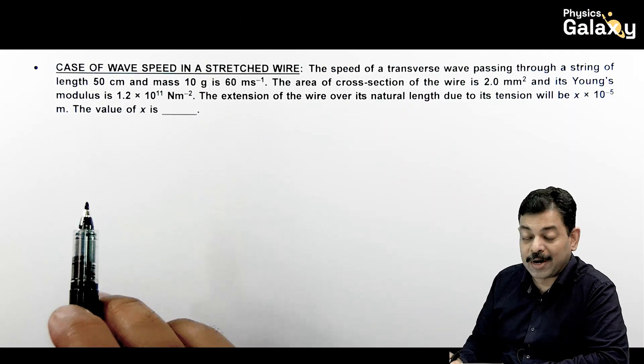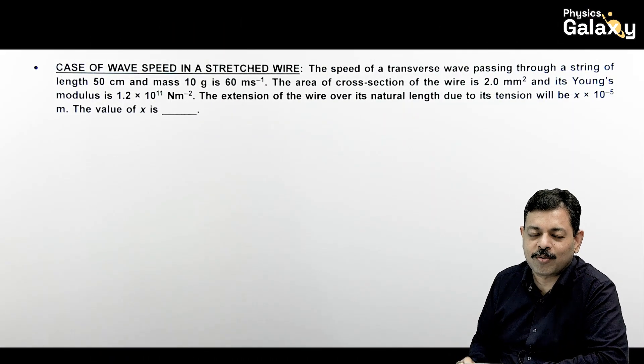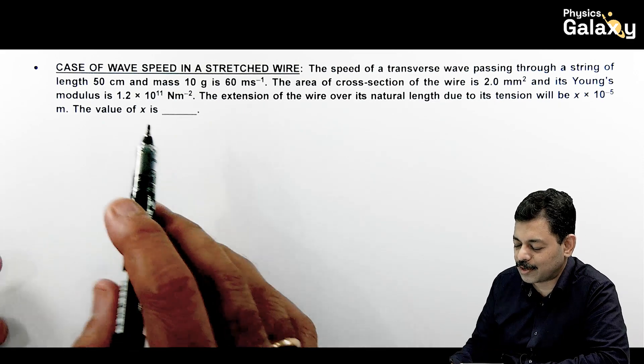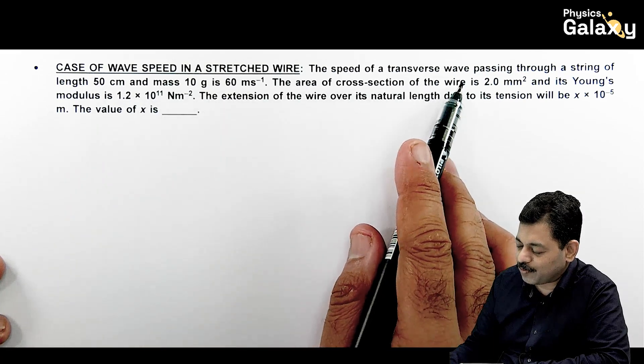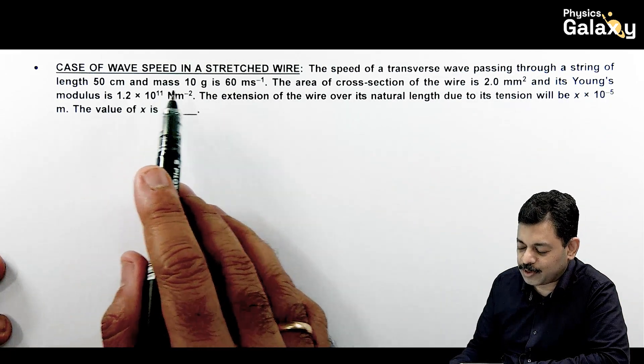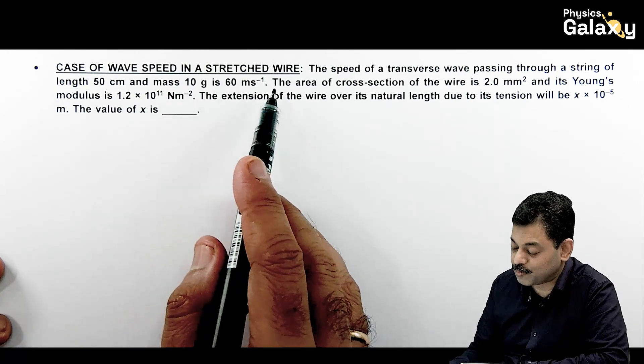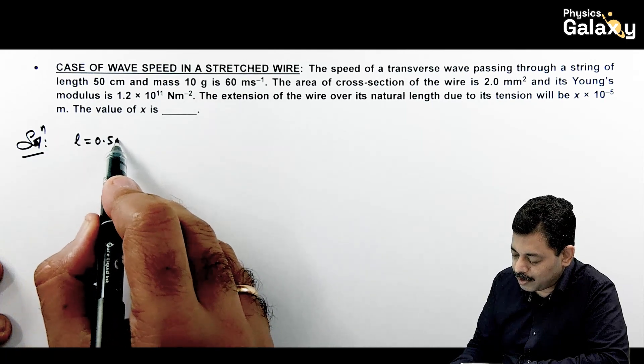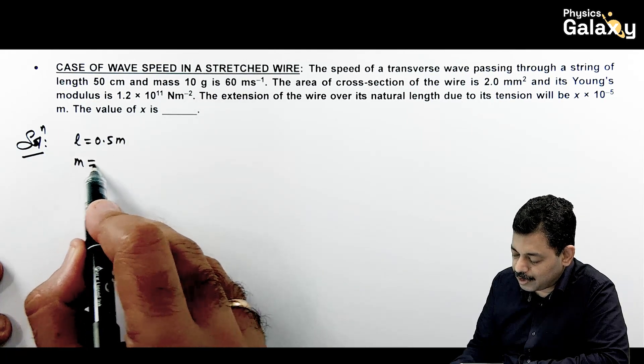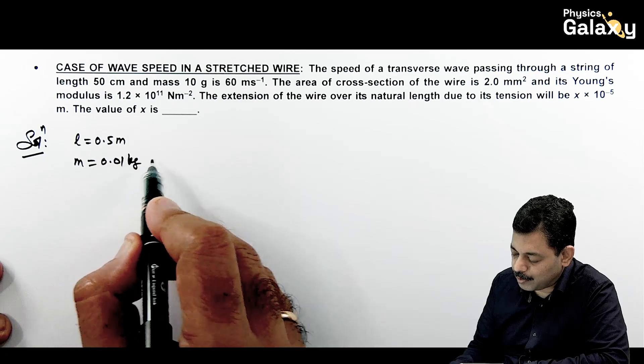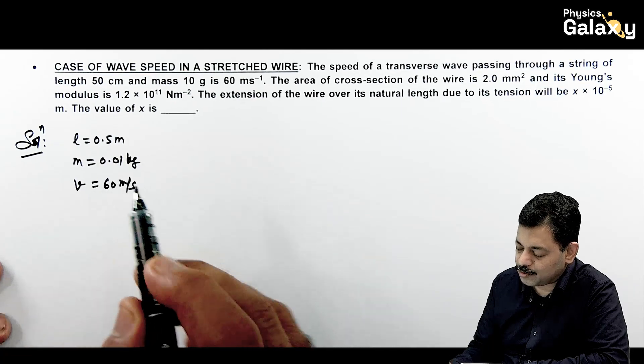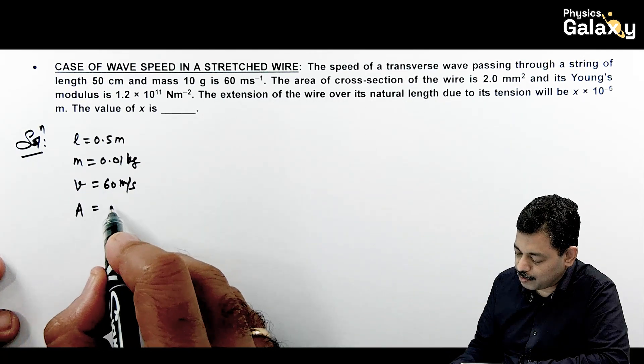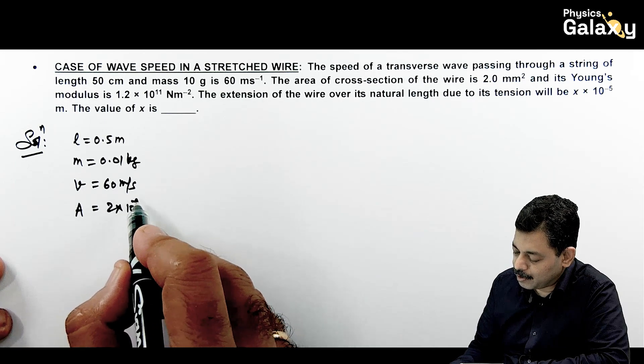Thank you. So again, slightly different case with some more concepts included. It says the speed of a transverse wave passing through a string of length 50 cm and mass 10 grams is 60 m/s. So, data compile karna. String ki length hai 0.5 meter, mass given hai 10 grams that is 0.01 kg, wave speed is given to us as 60 m/s. Further, it says the area of cross section of wire A is given to us as 2 into 10 to the power minus 6 meter square.